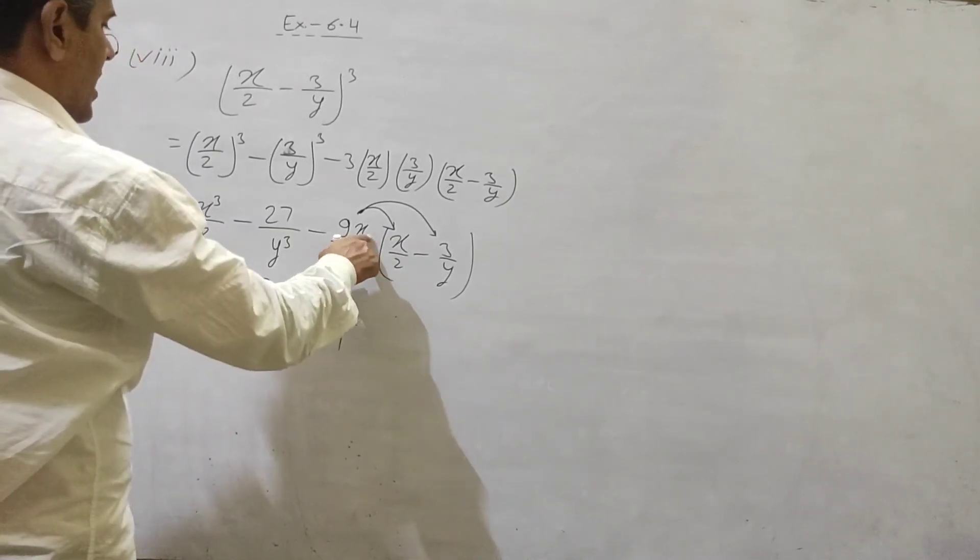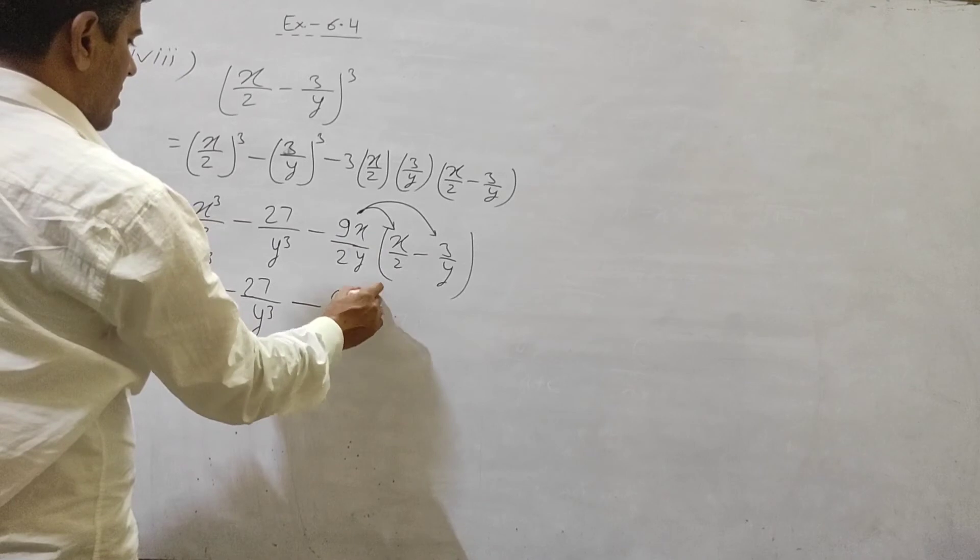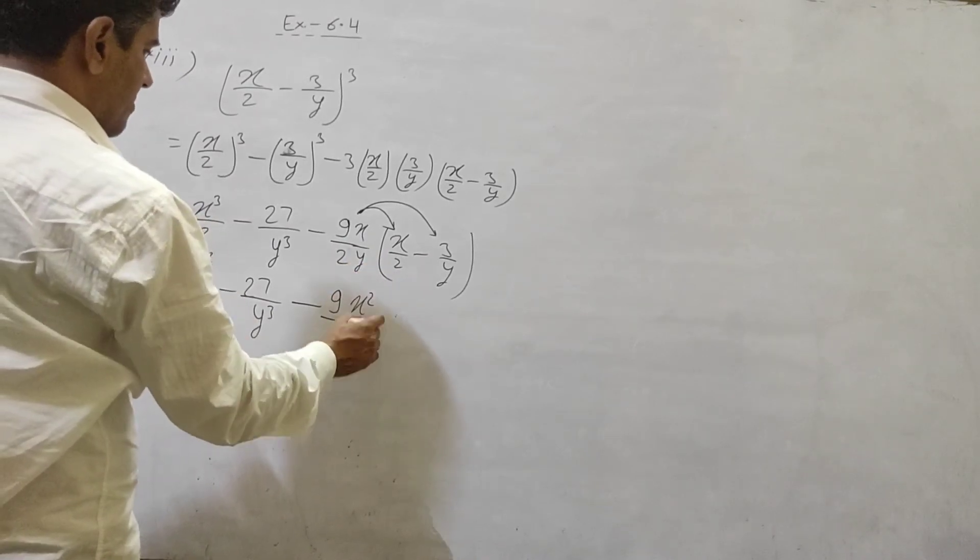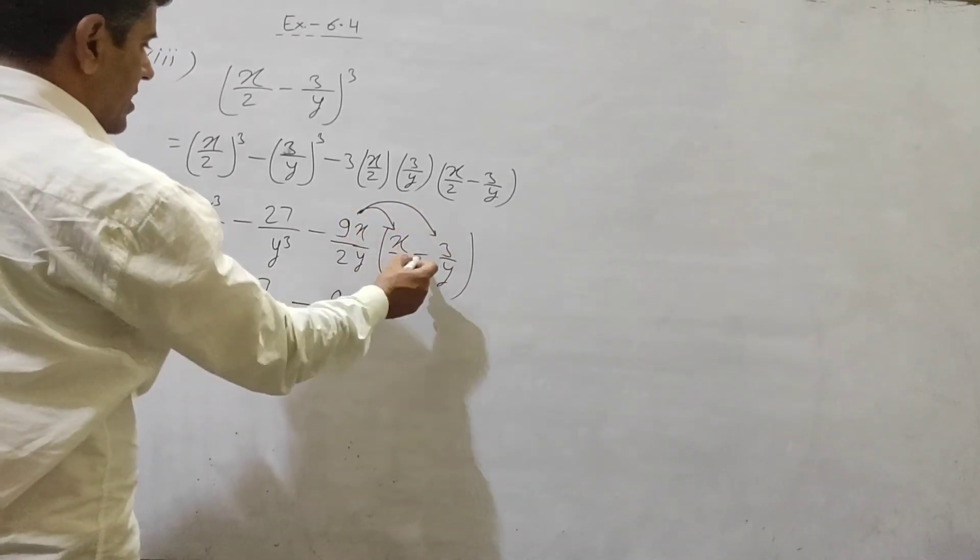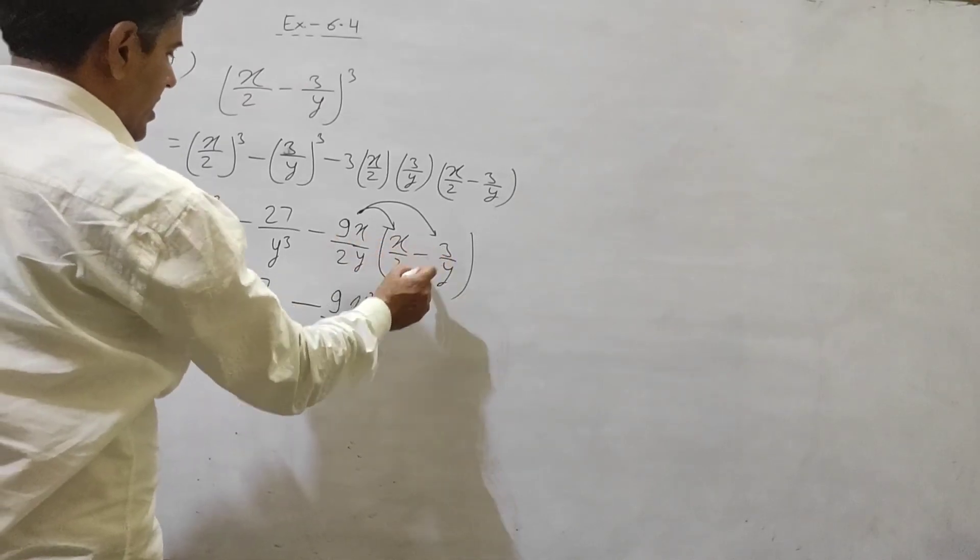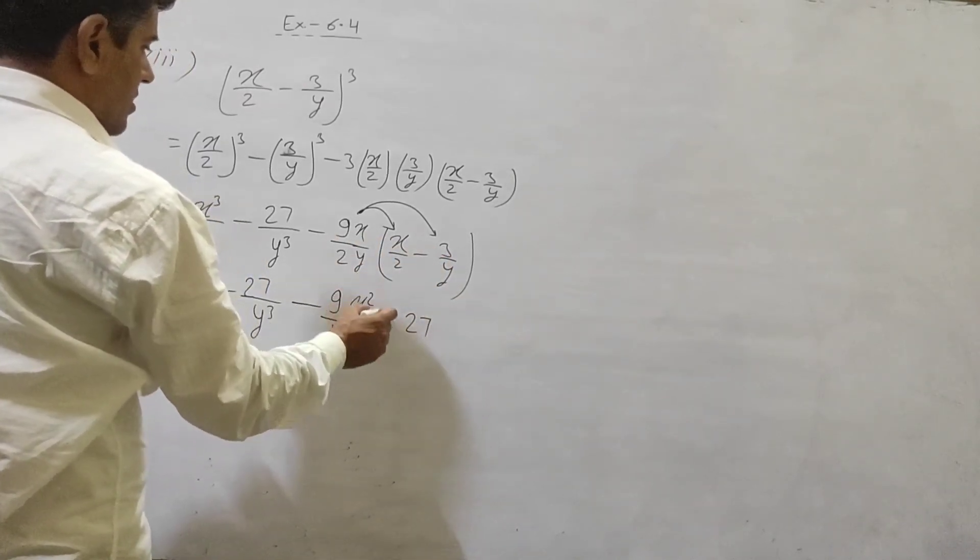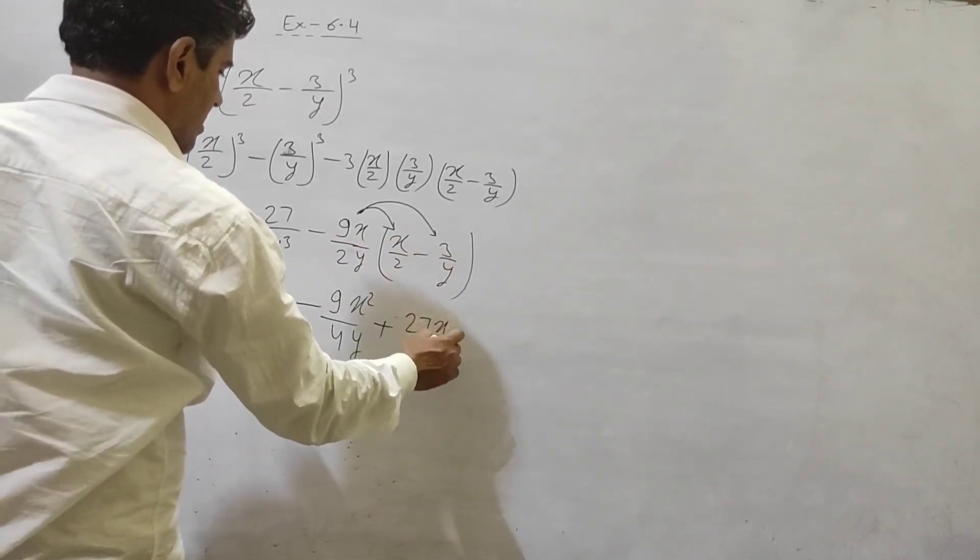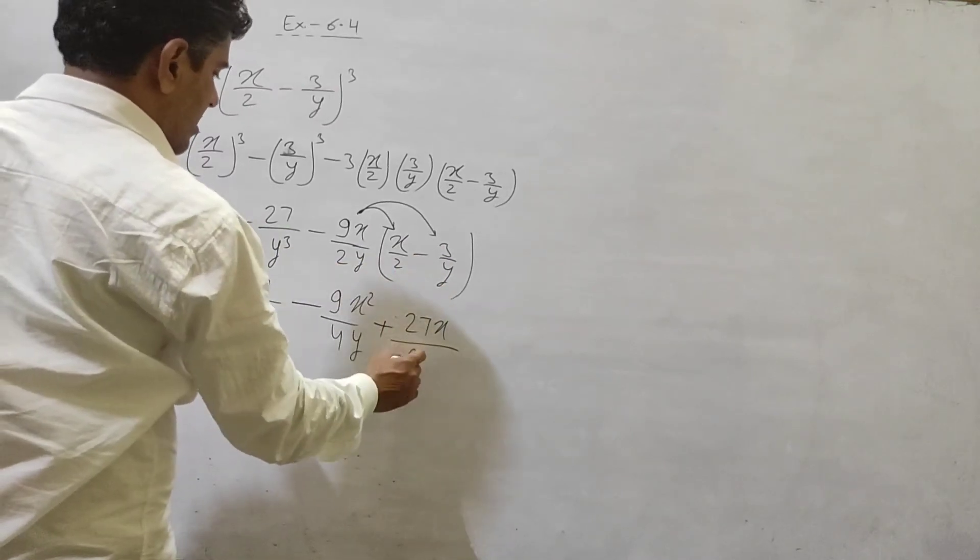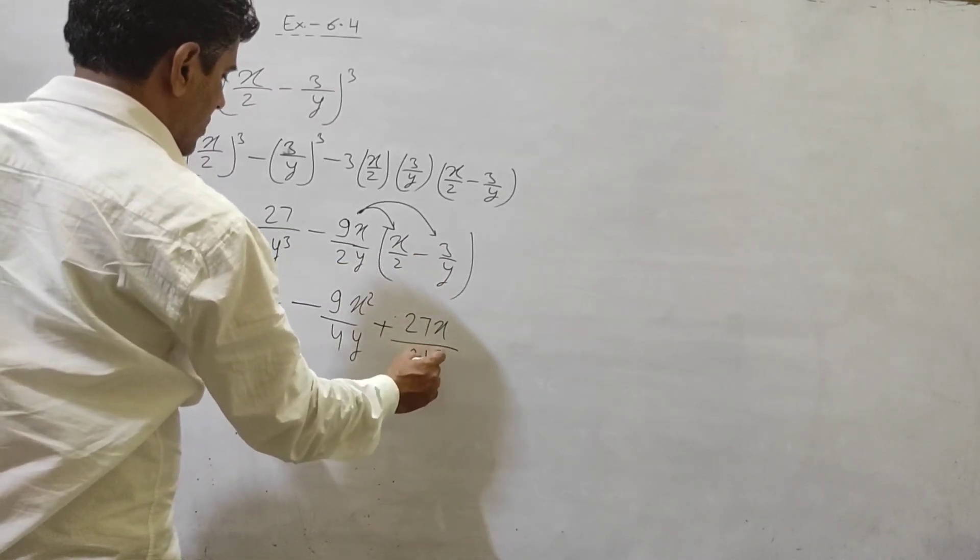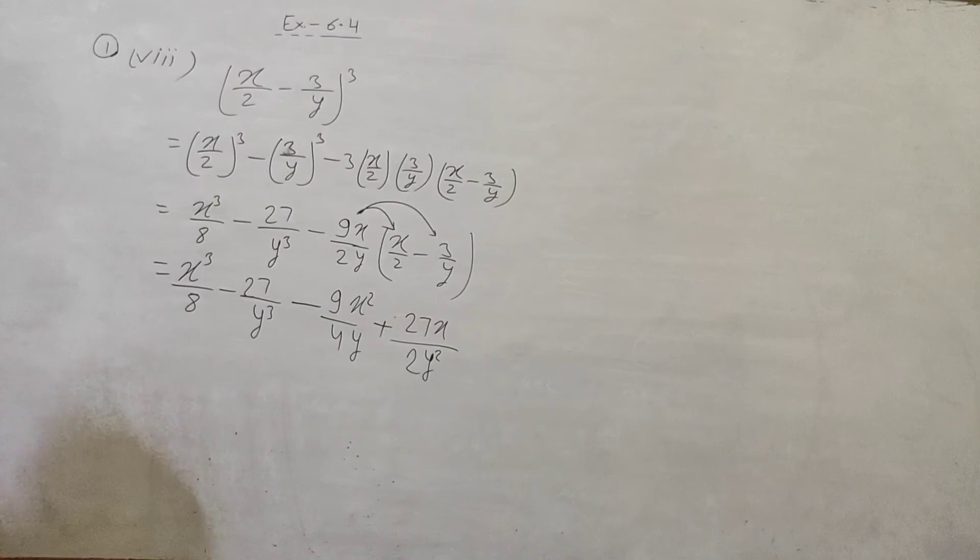2 x 2, 4. Now x, x, x, double x square. Y single. Now we say, minus minus plus 9 x 3, 27. X by 2 Y, Y say, multiply 2 Y square.